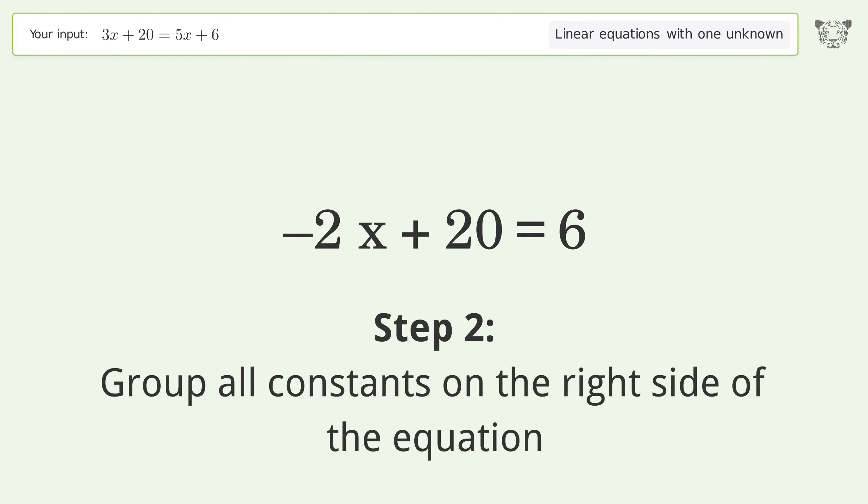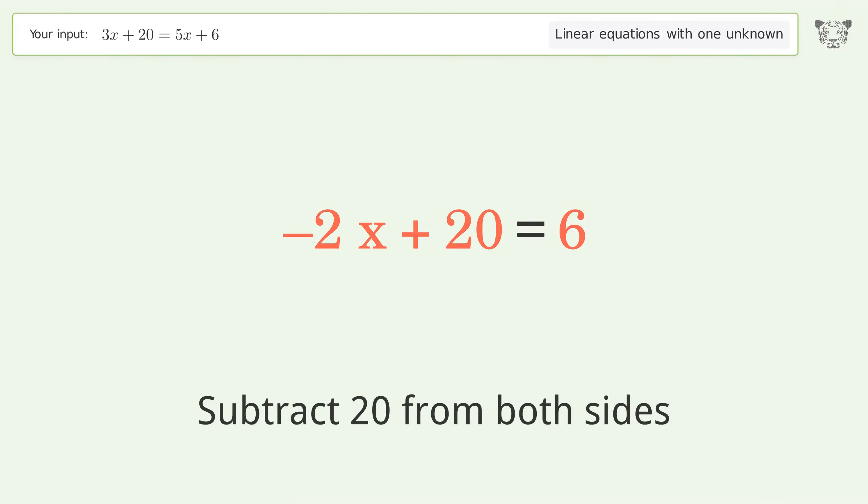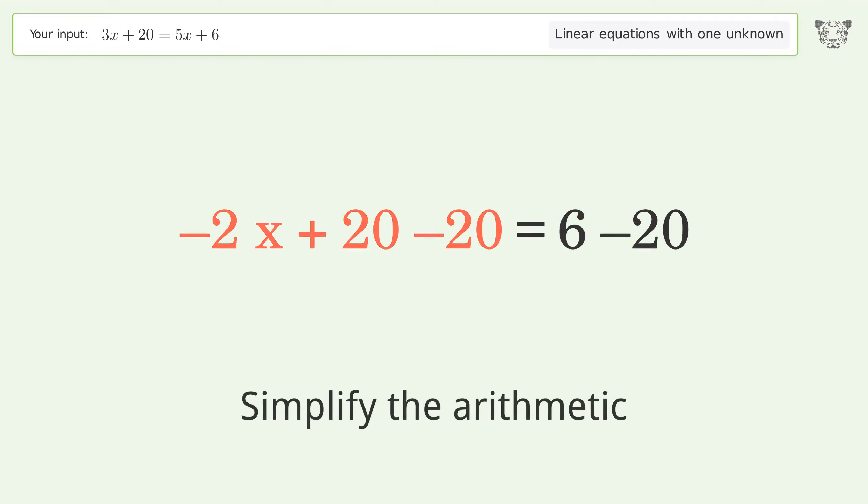Group all constants on the right side of the equation. Subtract 20 from both sides. Simplify the arithmetic.